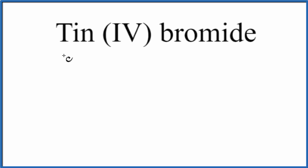In this video, we'll write the formula for tin (IV) bromide. So let's first write the element symbol for tin from the periodic table. That's just Sn.